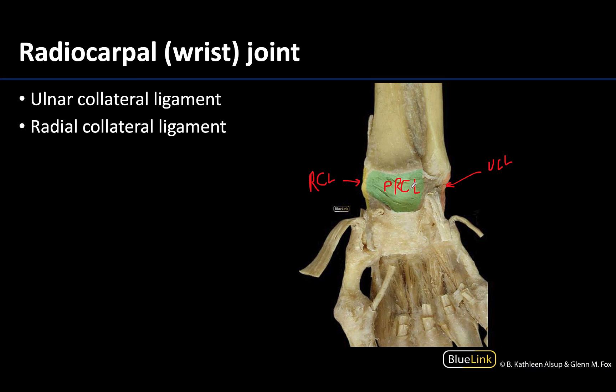Those are the key points when talking about the radiocarpal joint. Now let's get into some muscles of the upper limb — I'll see you at the next station.